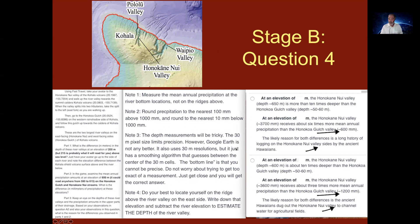In particular, you're going to be looking at the Hanakoa Gulch on the west-facing side, the rain shadow side, and then the Honokane Nui Valley on the rainier, east-facing side. You're going to be going to specific elevations and analyzing the depth and then looking at the precipitation differences.